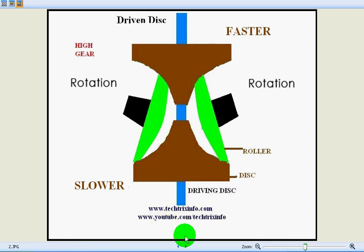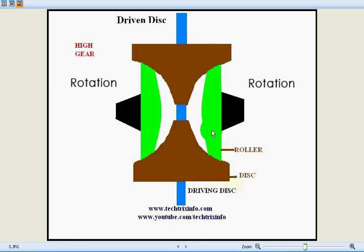See, both the rollers have changed position towards the center, engaging almost the same position of both the driving disc and the driven disc. That means they will be delivering almost the same speed from the driving disc towards the driven disc.